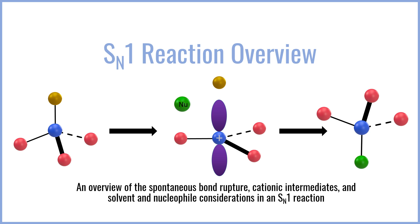In this case, we're going to be taking a look at how the bond spontaneously ruptures to create a carbocation intermediate, the resulting nucleophilic considerations for the actual substitution, and the stereochemical outcomes of the SN1 reaction.